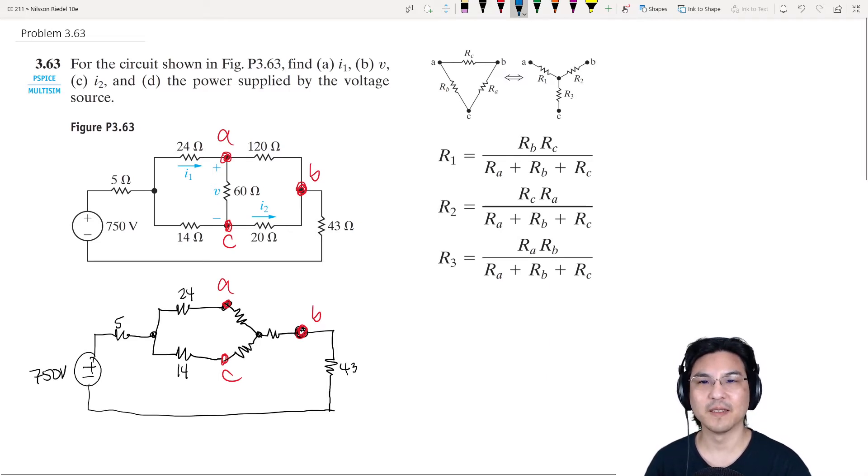If I just look at the pattern, like node A is here, so opposite node A is RA, so that would be the 20 ohm. Opposite node B is this one, so this is RB. Opposite node C is this one, so this one is RC.